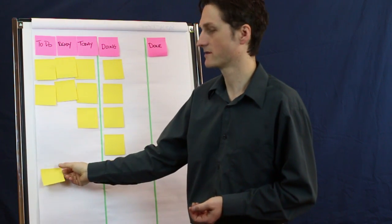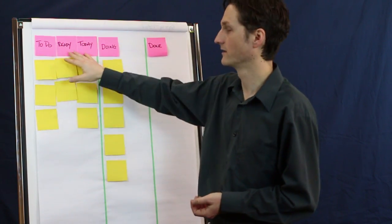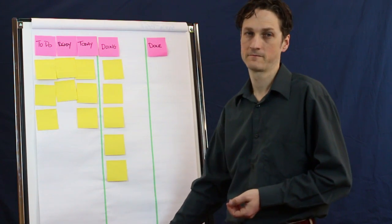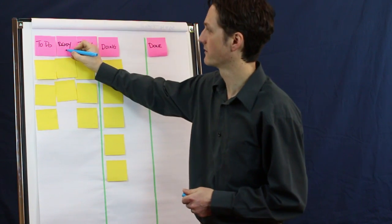And to make this a reasonable amount, we typically want to add a limit to our Ready column, say maybe four or five items.